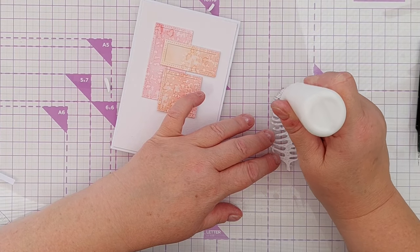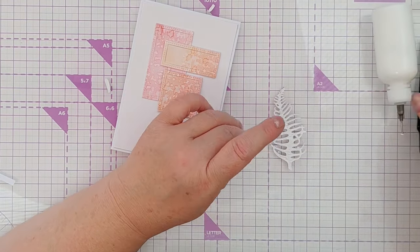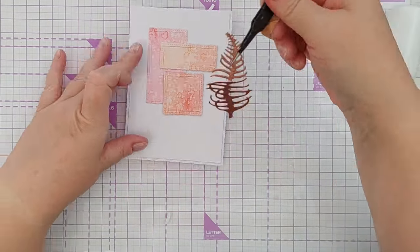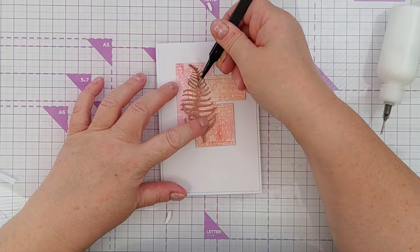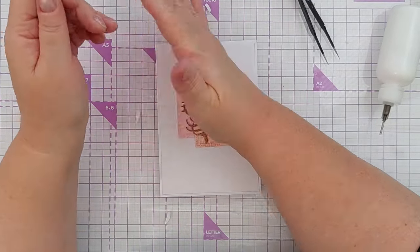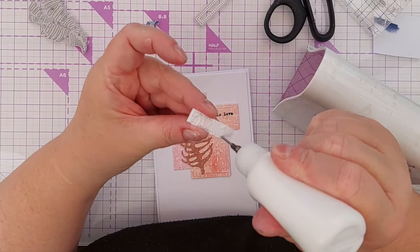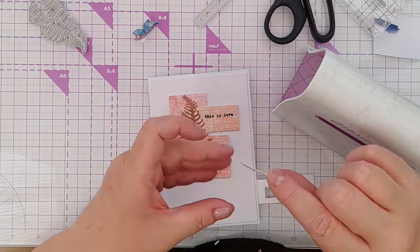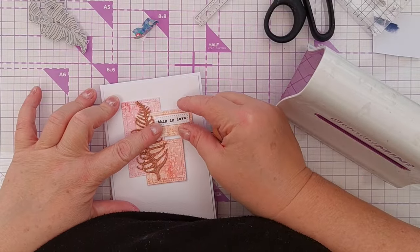For my sentiment I chose a 'this is love' stamp in a typewriter font. I stamped it straight onto one of the rectangles but I didn't like the way it looked, so I stamped it onto some card and then die cut it out with a stitched rectangle die. I much preferred that so I popped that over the initial stamping.